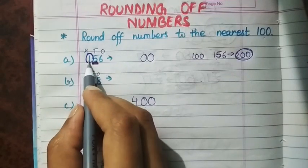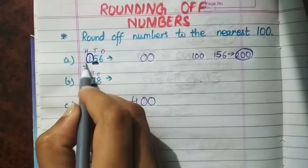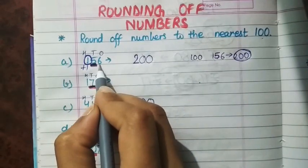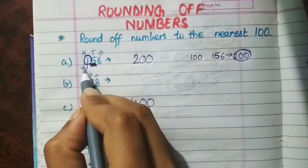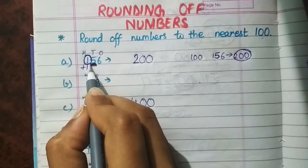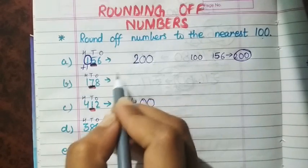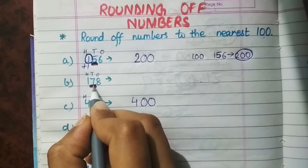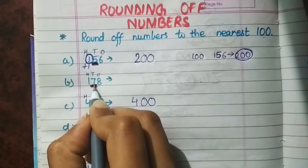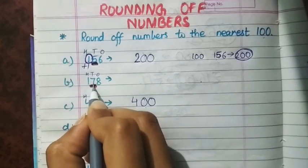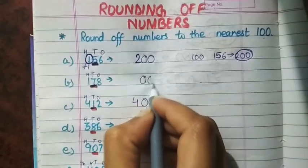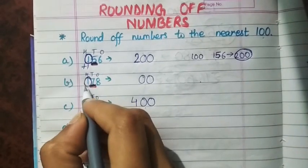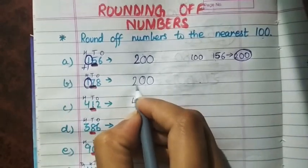So here, for 156, the 10's digit is 5, so 1 plus 1 equals 2. The number 156 is nearest to 200. Let's try the B part: the digit at the 10's place is more than 5, so we make 10's and 1's 0, and add 1 in the 100's digit. So 1 plus 1 equals 2.